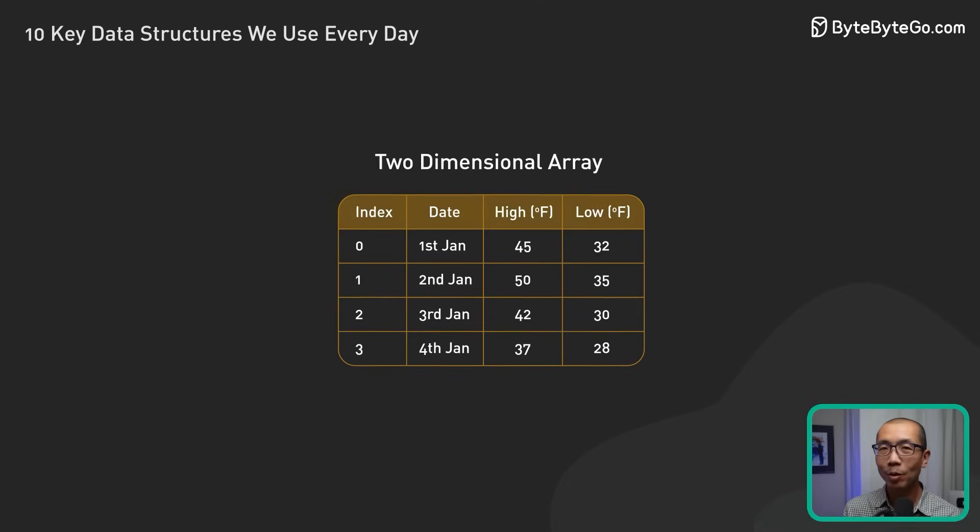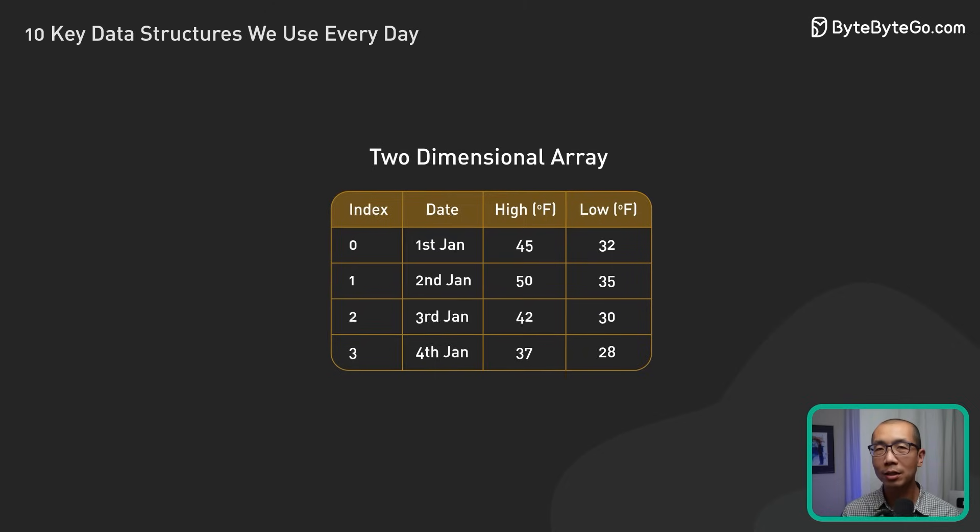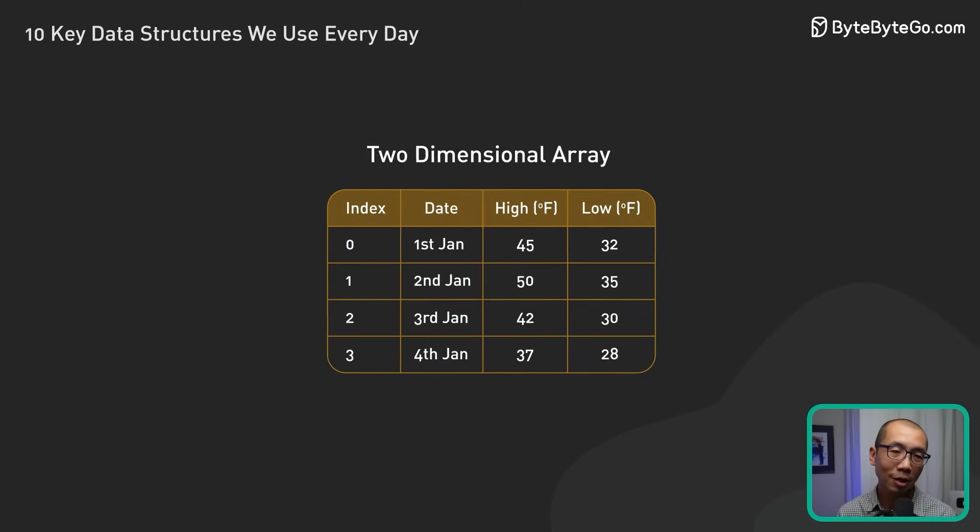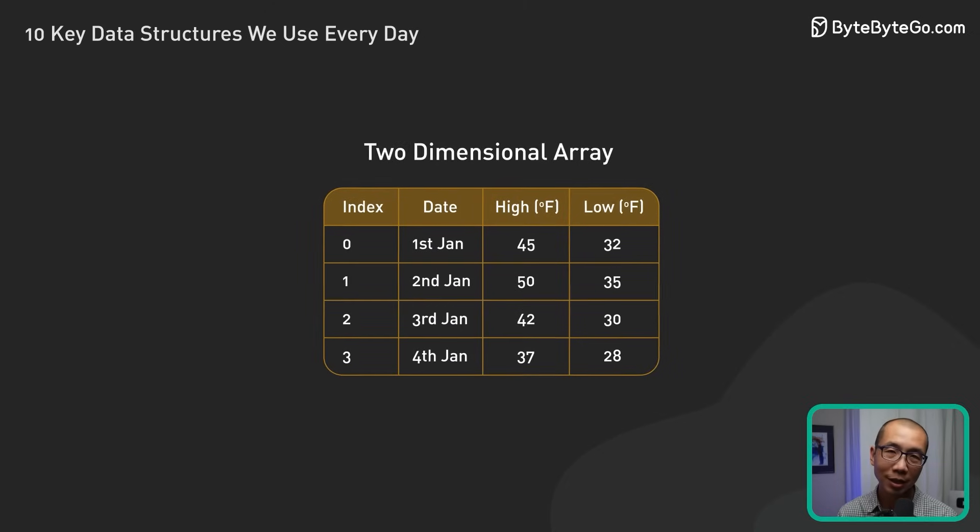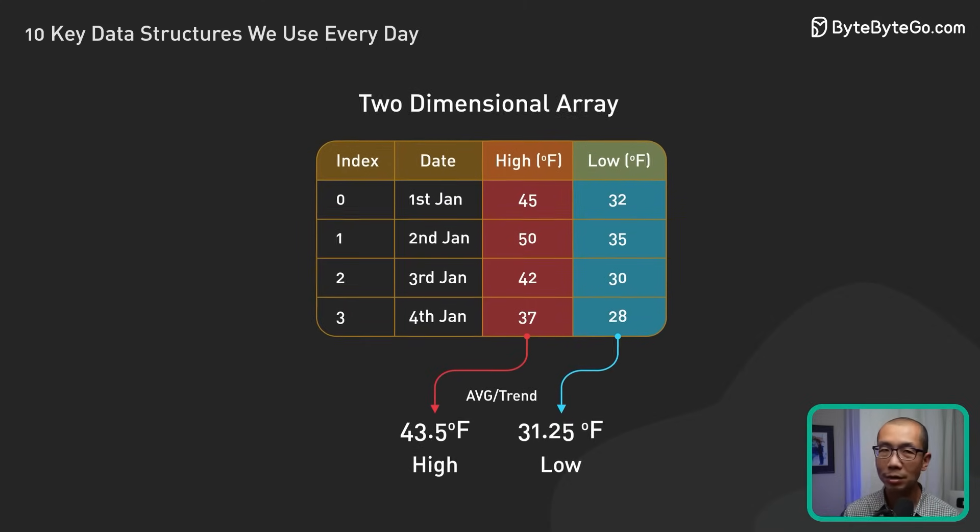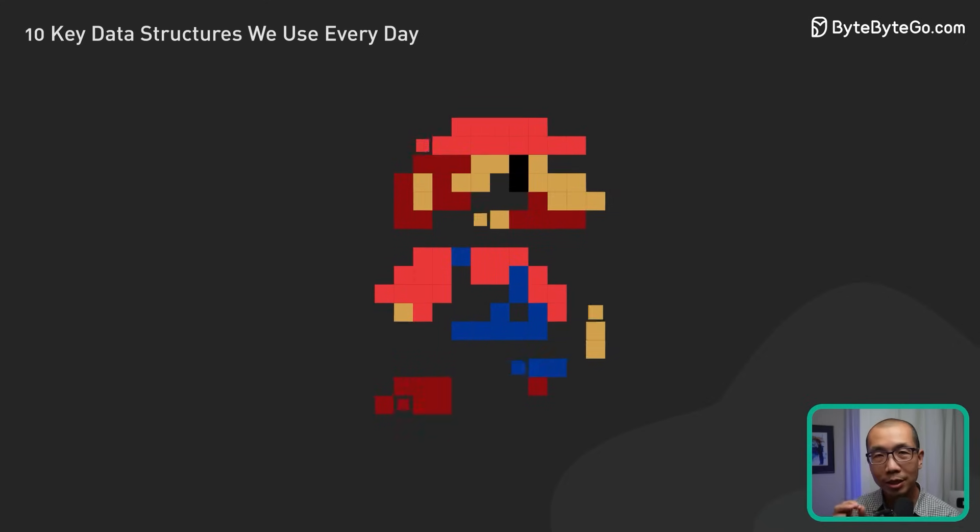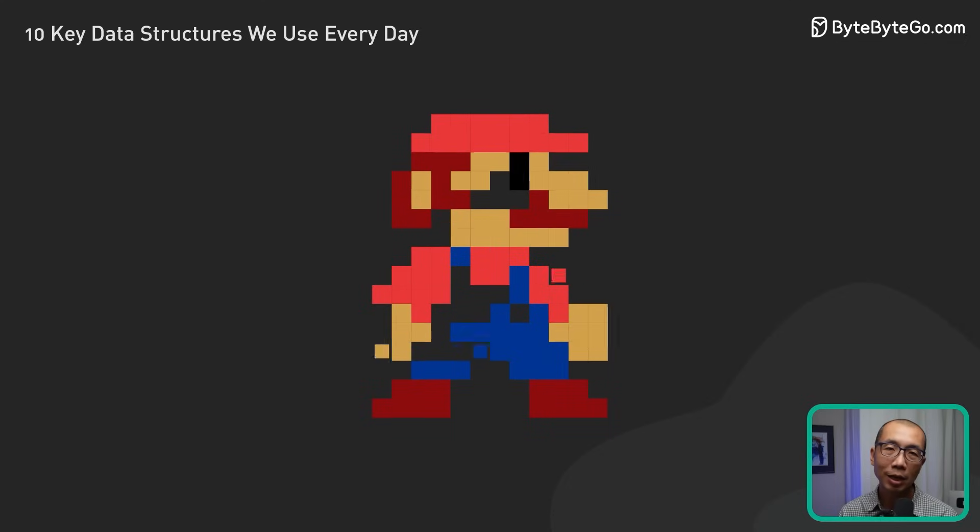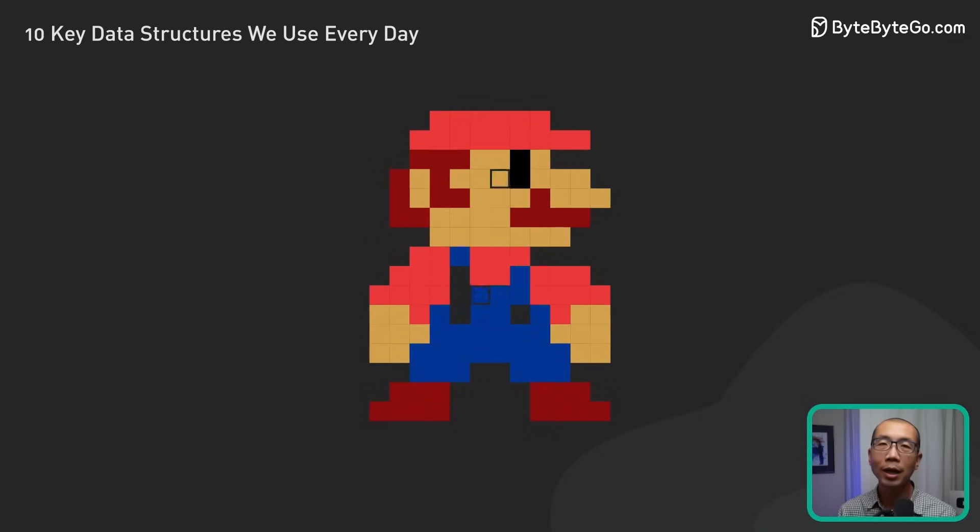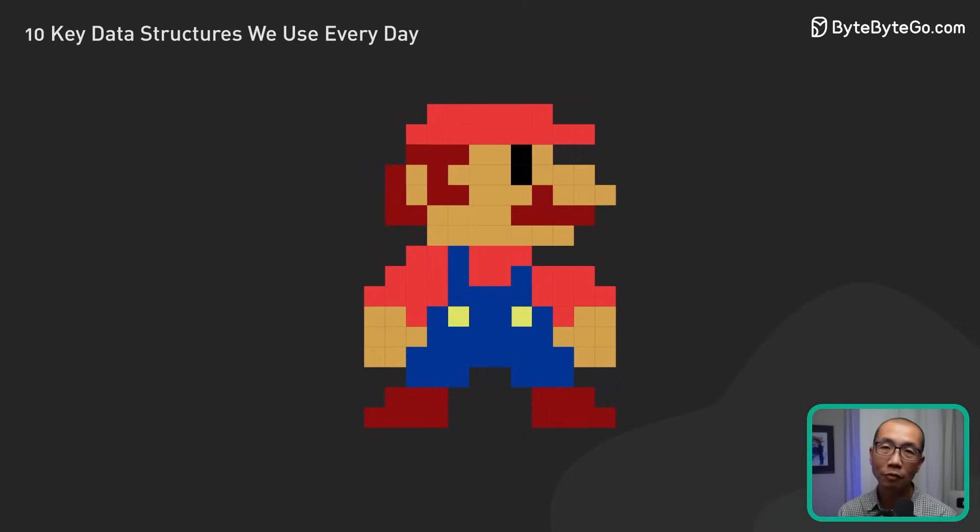For example, in a weather application, an array could be used to store temperature readings for a specific location over a defined period. This allows for easy calculations like averages and trends. Arrays are also widely used in image processing, where each pixel's color data can be represented in a two-dimensional array. It enables efficient manipulation and transformation of the image.